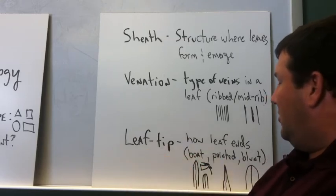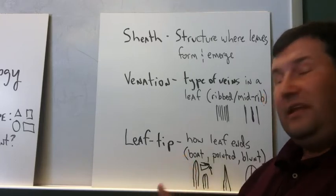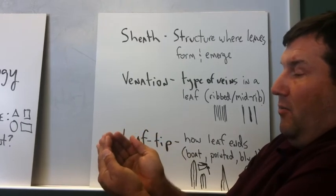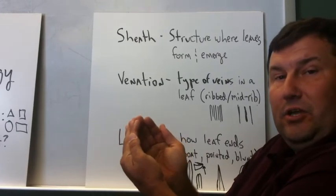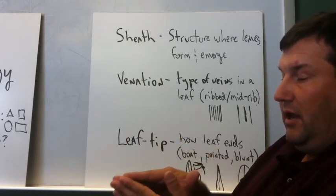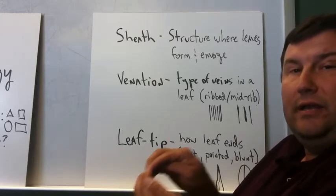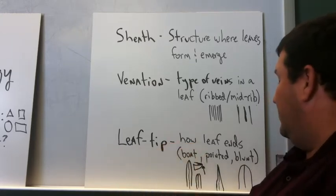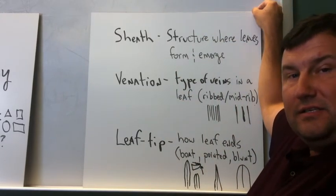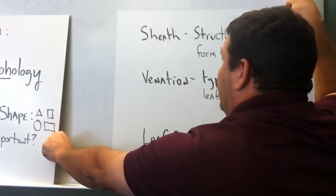The leaf tip shape is also important in identifying turf grasses, and this is how the leaf ends. There are three basic types: a boat shape, which is kind of formed almost as a tip of a canoe; a pointed shape, which is where the leaf is ending in a more pointed end; or a blunt shape, where the leaf is rounded and forms a blunt end to the leaf tip. These structures are important for being able to identify turf grasses, and if we're able to do that, then we can identify the grasses and determine what needs to be done.